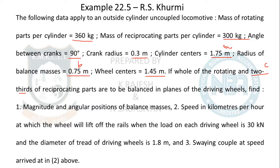Find the magnitude and angular position of the balancing masses. Also find the speed in km/h at which the wheels will lift off the rails, when the load on each driving wheel is 30 kN and the diameter of the tread of the driving wheel is 1.8 m. This means your train wheels are 1.8 m in diameter. The weight of the engine resting on each wheel is 30 kN — at what speed will the hammer blow cause the train to lift off the track?